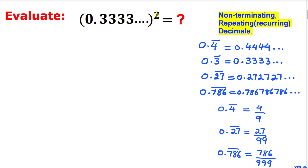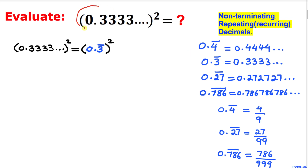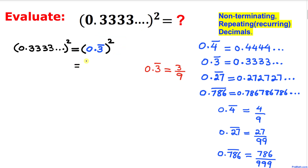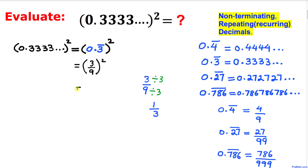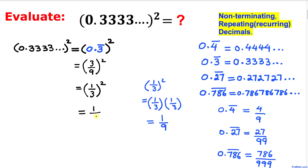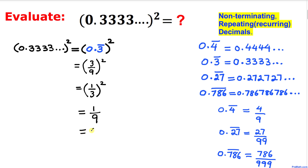Here's our next question: 0.333 going on and on, which we are going to square. This repeating non-terminating number can be written simply as 0.3 with a bar on top, which by our definition equals 3 divided by 9. We can simplify 3 over 9 to 1 over 3, and then squaring 1 over 3 gives us 1 over 9.